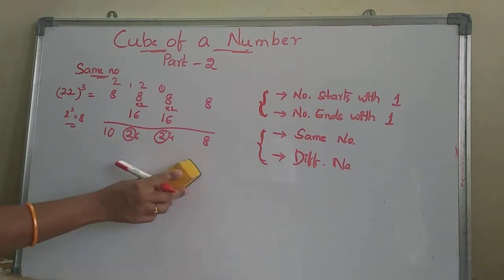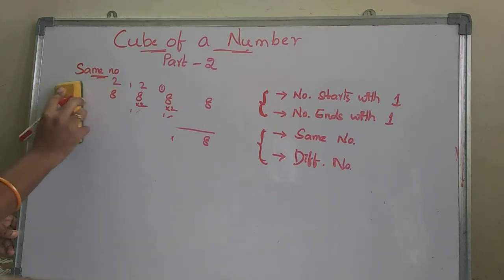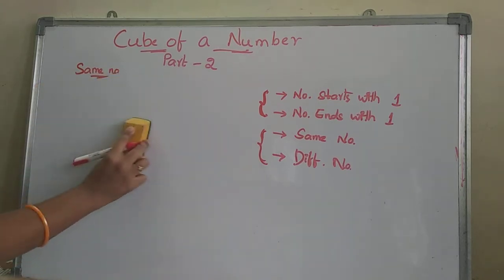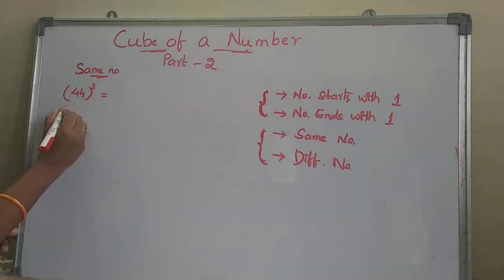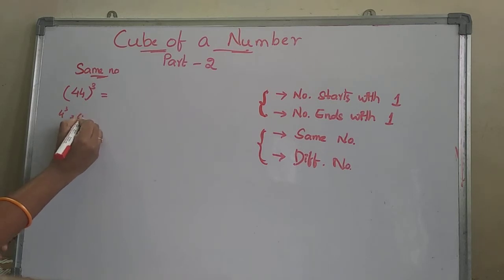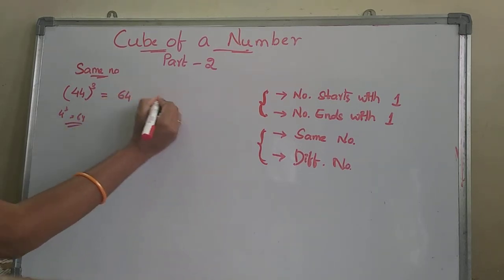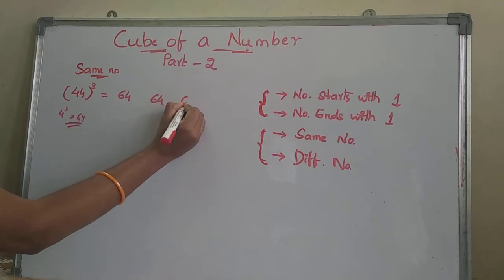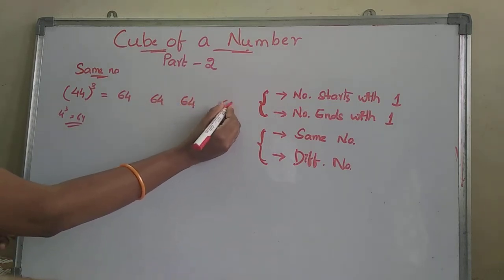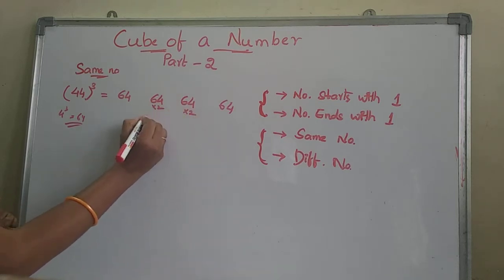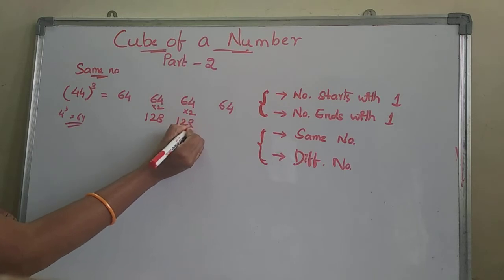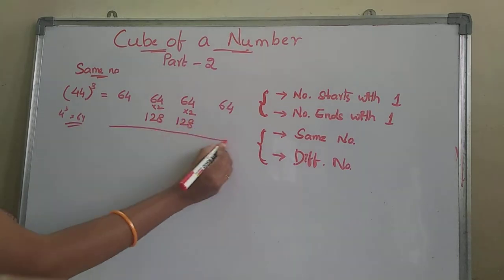Next, let's take one more example: finding the cube of 44. Same method — 4 cube is 64. Write 64 four times. And after that, the middle 2 numbers are multiplied by 2: 64 becomes 128. Write 128 for the middle two positions.